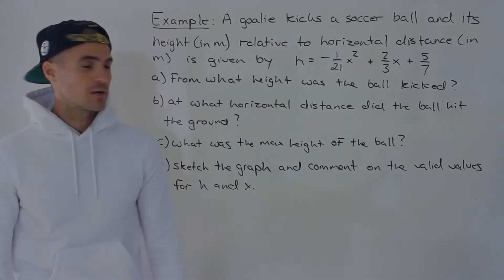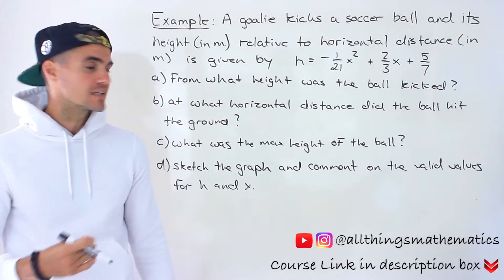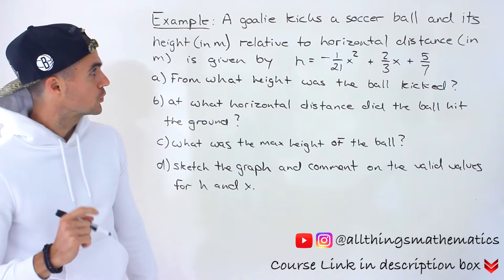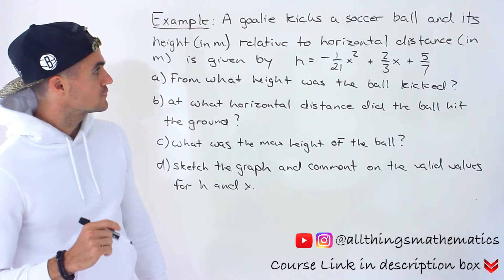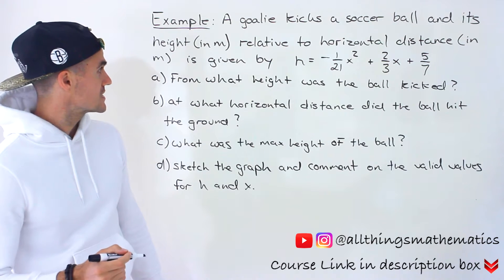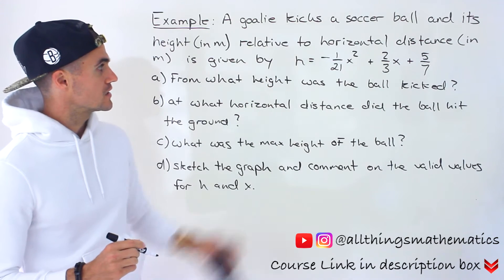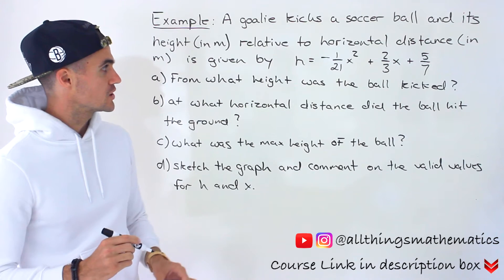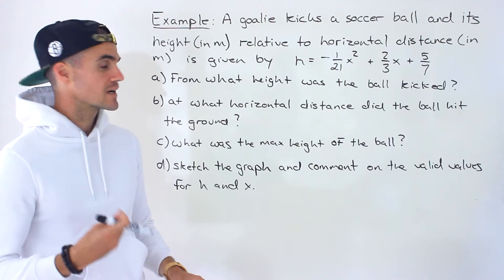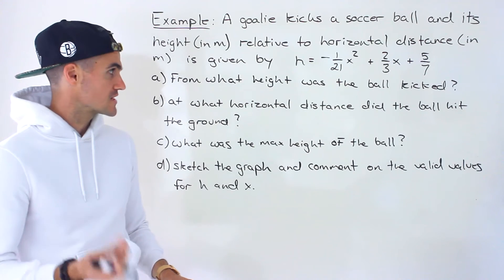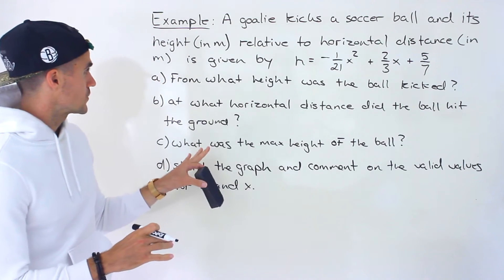Welcome back everyone, Patrick here. Moving on to the next word problem dealing with quadratics. We're told a goalie kicks a soccer ball and its height in meters relative to the horizontal distance in meters is given by the equation: h equals negative 1 over 21 x squared plus 2 over 3 x plus 5 over 7. Given that scenario, we have to answer these questions.